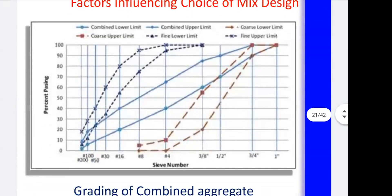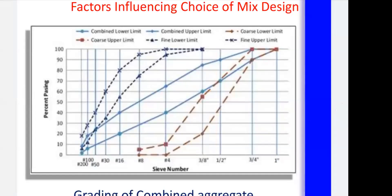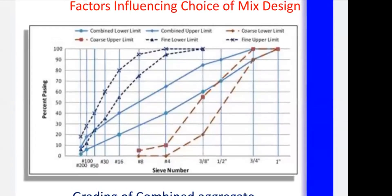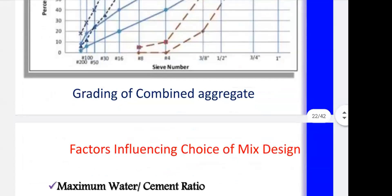A grading chart shows sieve number on the x-axis and percentage passing on the y-axis. This type of graph is also drawn in the fineness modulus experiment. The grading zone chart shown here is for reference; in practical work you need to draw your own graph of percentage passing for each sieve number for each type of aggregate.